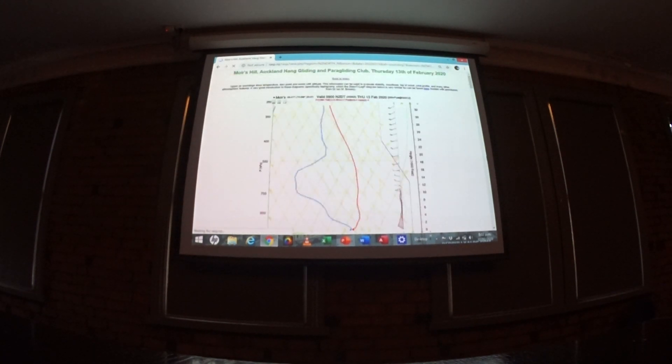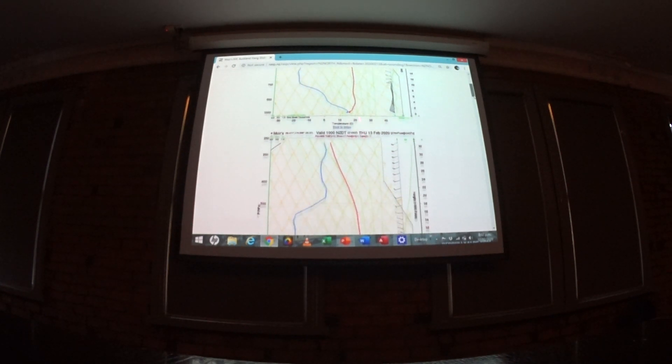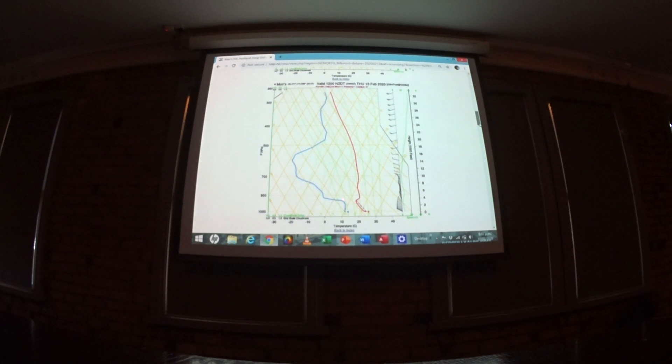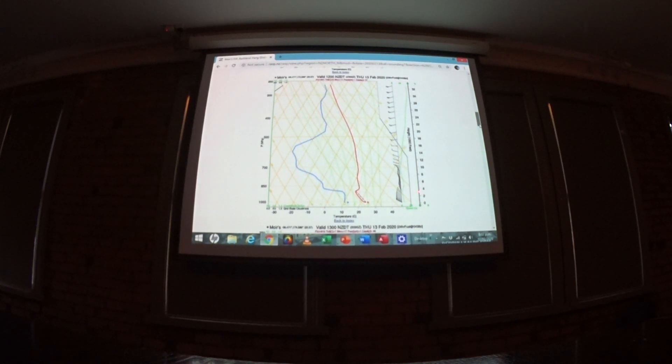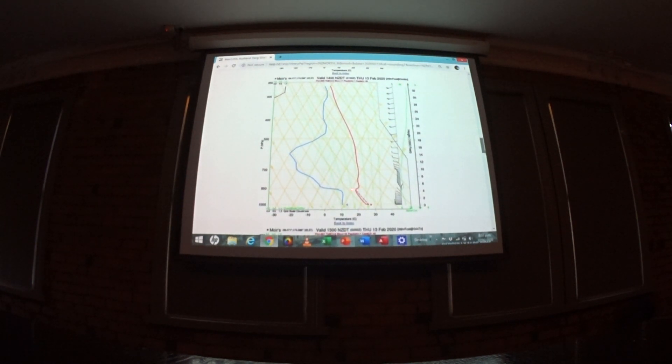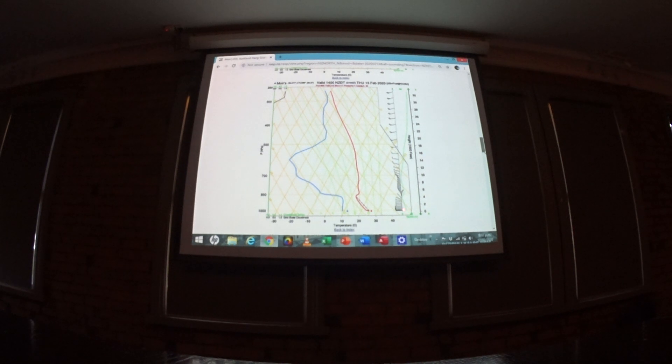If we look at the skew-T, down at the bottom we've got a bit of analysis. There's nothing happening earlier in the morning. At 12 o'clock we've got a good gap so we can say it's going to be blue. This is cloud base where the gap stops at the inversion, about 3,000 feet.